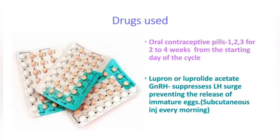Drugs used for suppression include oral contraceptive pills given for two to four weeks from the starting day of the cycle. Leuprolide acetate, a gonadotrophin releasing hormone agonist, suppresses the LH surge which prevents the release of immature eggs. Usually the injection is given subcutaneously every morning.